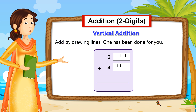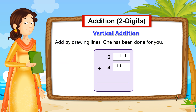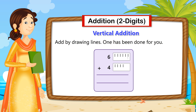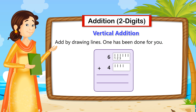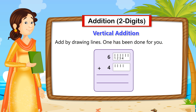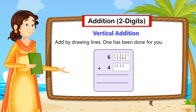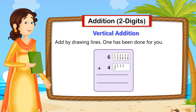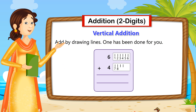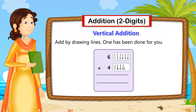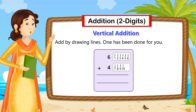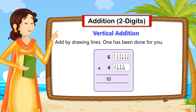Now we need to count the total number of lines: 1, 2, 3, 4, 5, 6, 7, 8, 9, 10. So 6 plus 4 is 10.